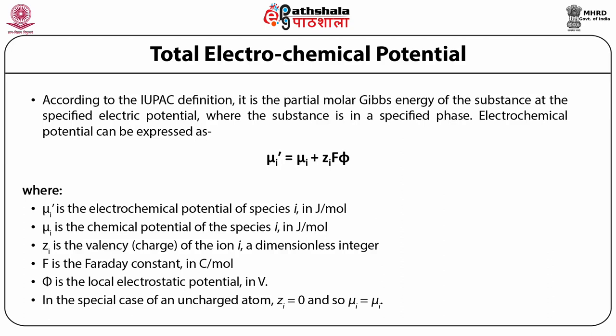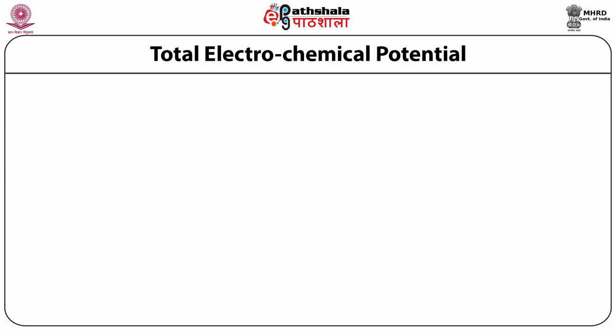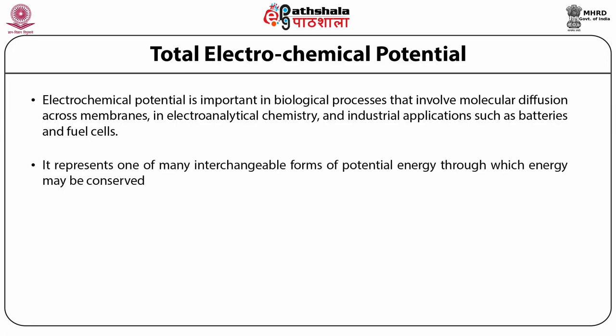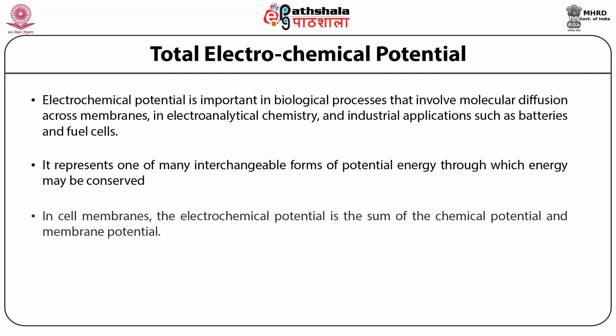Electrochemical potential is important in biological processes involving molecular diffusion across the membrane, energy production, in electroanalytical chemistry, and in industrial applications such as batteries and fuel cells. It represents one of the many interchangeable forms of potential energy through which energy can be conserved. In cell membranes, electrochemical potential is the sum of chemical potential and membrane potential, and it is important for energy production whether in photosynthesis, the electron transport system, or any other membrane functions.